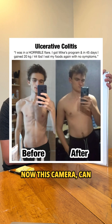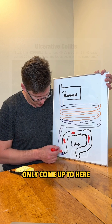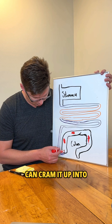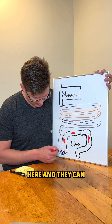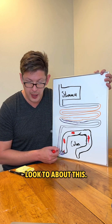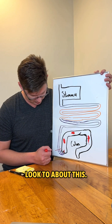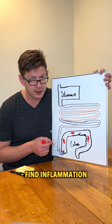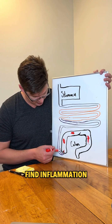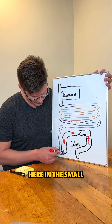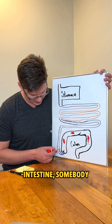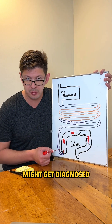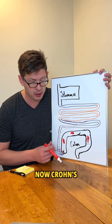This camera can only come up to a certain point, and sometimes they can cram it up into the small intestine and look a bit further. Usually if they find inflammation in the small intestine, somebody might get diagnosed with Crohn's disease.